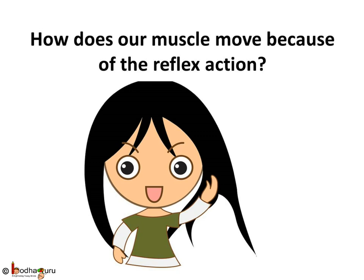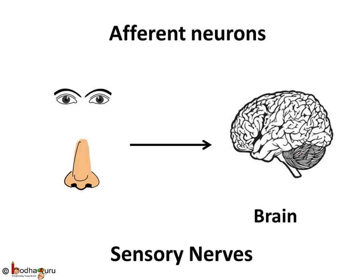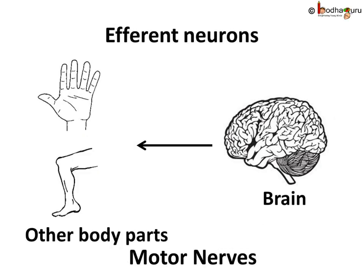So, exactly how does a muscle move because of the reflex action? First, let us clarify the different types of nerves involved in the process. Neurons that receive information from our sensory organs and transmit this input to the central nervous system are called afferent neurons. These are also called sensory nerves. Neurons that send impulses from the central nervous system to our limbs and other organs are called efferent neurons. These are also called motor nerves.